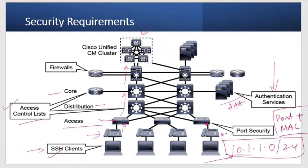We also have firewalls, which are basically implemented on the core layer where traffic is going out of your network — for example, when connected to an ISP, a remote branch, WAN connections, or an ITSP (Internet Telephony Service Provider). At that edge, which is the most vulnerable point to threats and attacks, you implement firewalls to protect against unwanted traffic.